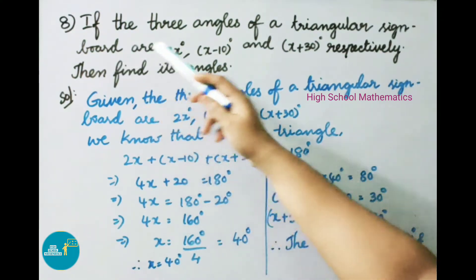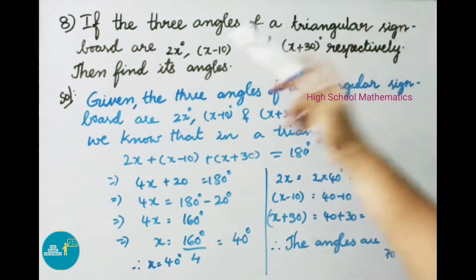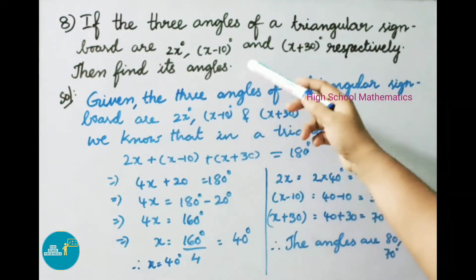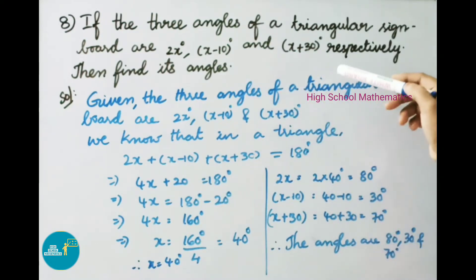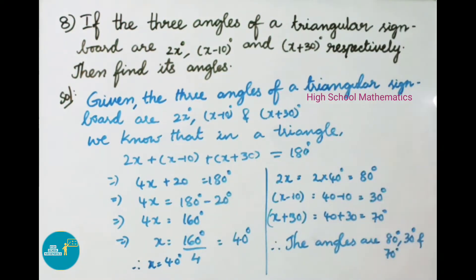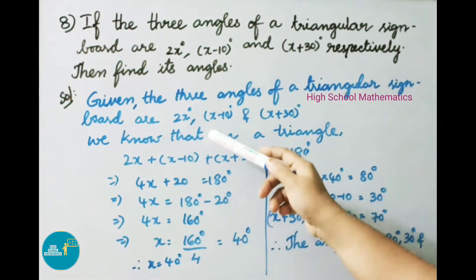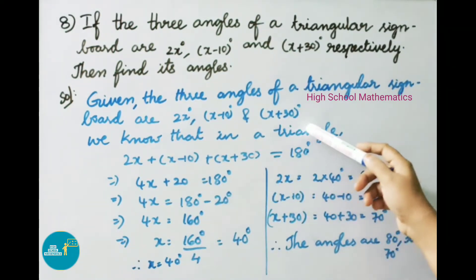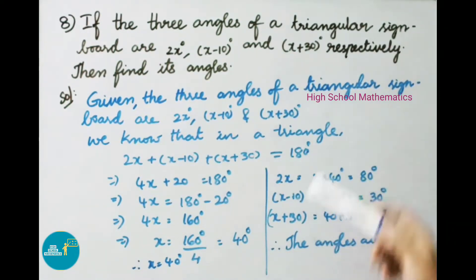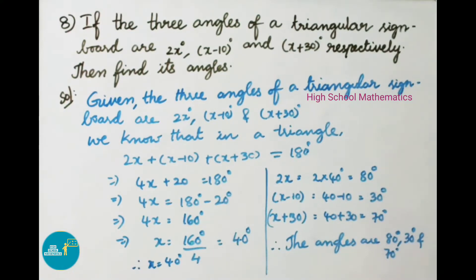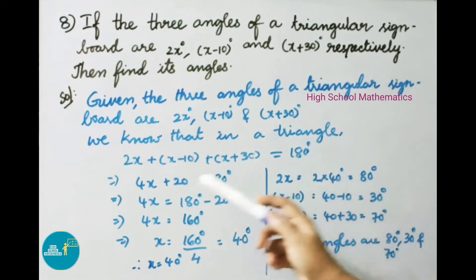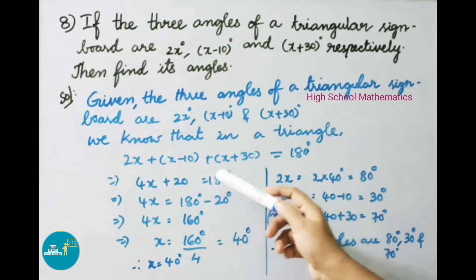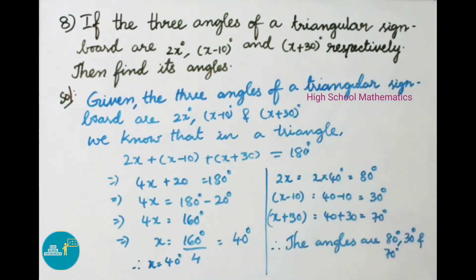Question number 8: If the three angles of a triangular sine board are 2x degrees, (x minus 10) degrees, and (x plus 30) degrees, find its angles. We know the sum of interior angles in a triangle equals 180 degrees. So: 2x plus (x minus 10) plus (x plus 30) equals 180 degrees.